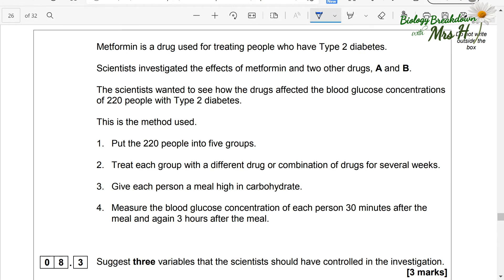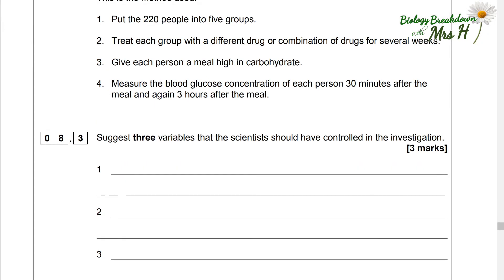Metformin is a drug used for treating people who have type 2 diabetes. Scientists investigated the effects of metformin and two other drugs A and B. The scientists wanted to see how the drugs affected the blood glucose concentrations of 220 people with type 2 diabetes. This is the method used. Put 220 people into five groups. Treat each group with a different drug or combination of drugs for several weeks. Give each person a meal high in carbohydrate. Measure the blood glucose concentration of each person 30 minutes after the meal and again three hours after the meal.